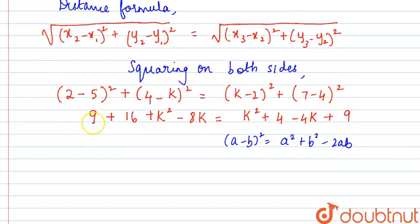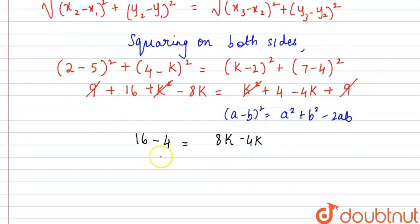So on both sides we have k² this can get cancelled, and then we have 9 on both sides we can cancel that as well. So what remains here is 16 minus 4 equals 8k minus 4k. So 16 minus 4 is 12 equal to 8k minus 4k is 4k. So 12 by 4 is equal to k, that is 3 is equal to k.